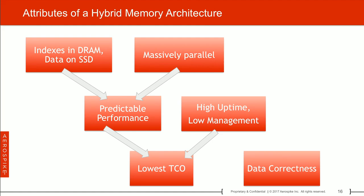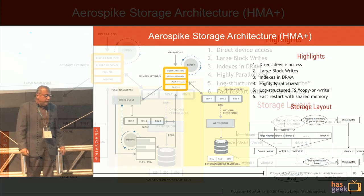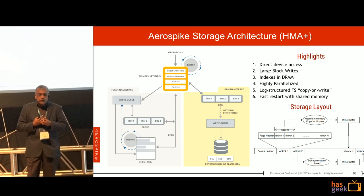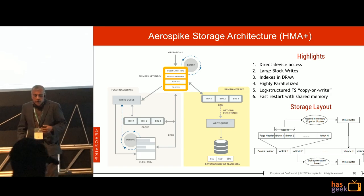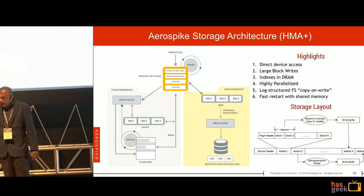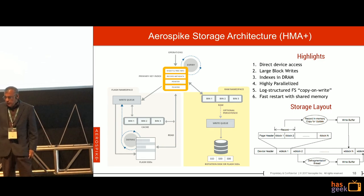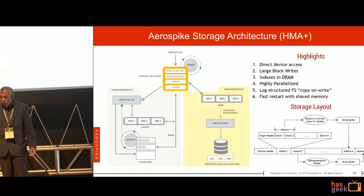The key takeaway from this talk: indexes are in DRAM, data is in SSD. This is a fundamental aspect of the hybrid memory architecture. Using parallelism, we can provide extremely predictable performance, very high uptime with low management. We also have a pure in-memory configuration option in Aerospike. The hybrid memory techniques we use are fairly classic — a log-structured file system, copy-on-write mechanism, highly parallelized. You can fit a whole bunch of SSDs onto a node and access data directly in parallel.